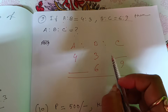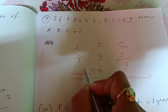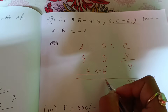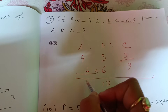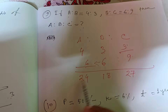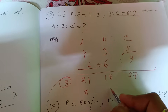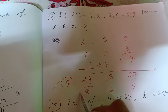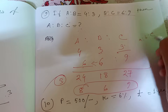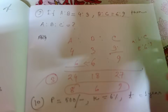A is to B is to C is equal to 8 is to 6 is to 9. Is it clear?